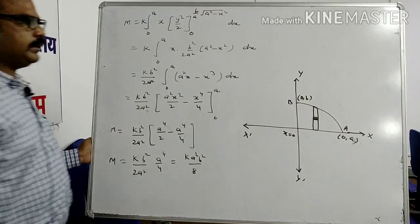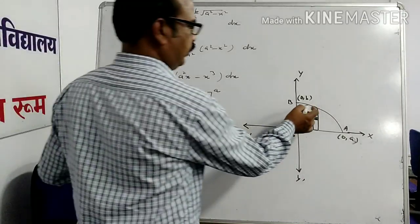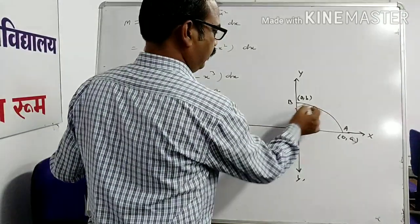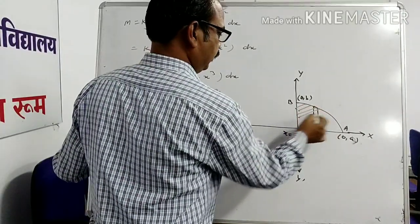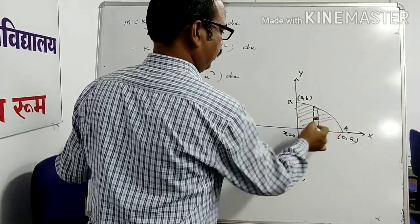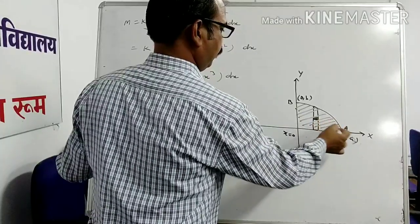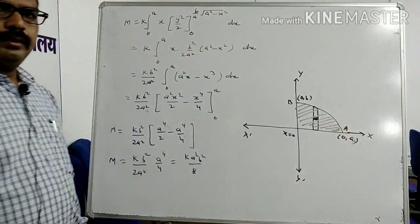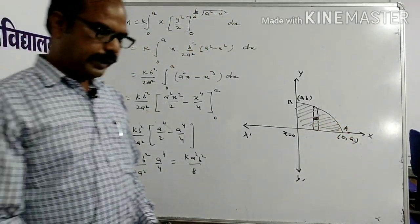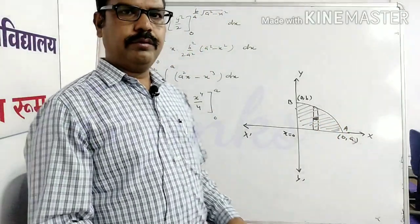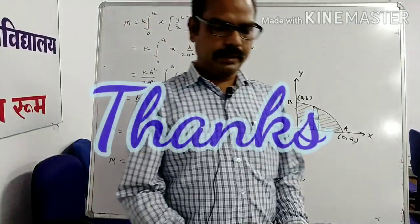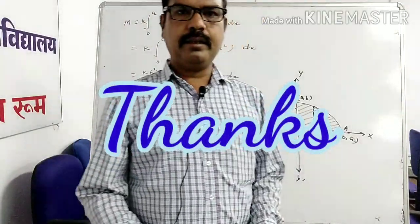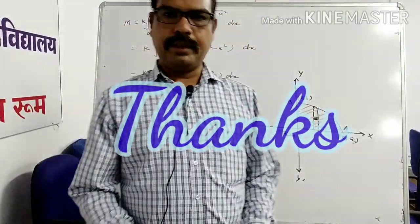So the mass of this shaded portion is ka²b²/8. In the next video, we will discuss the triple integral. Thank you very much.